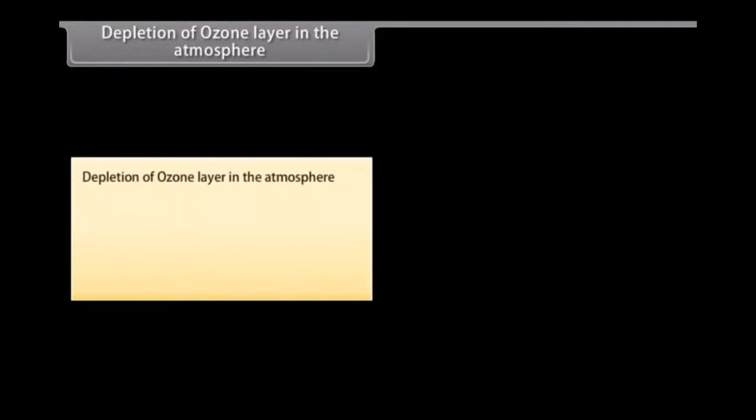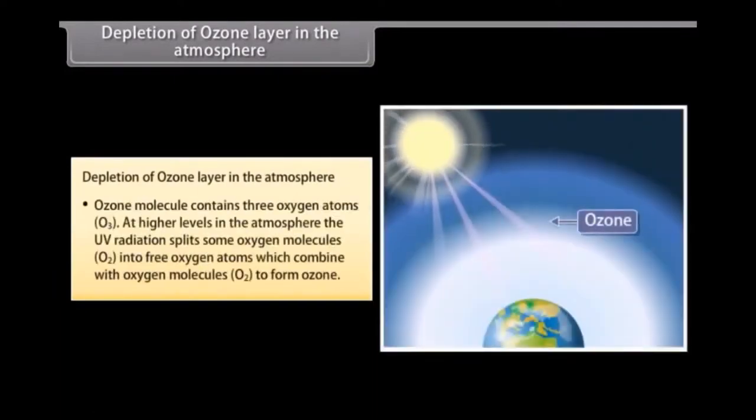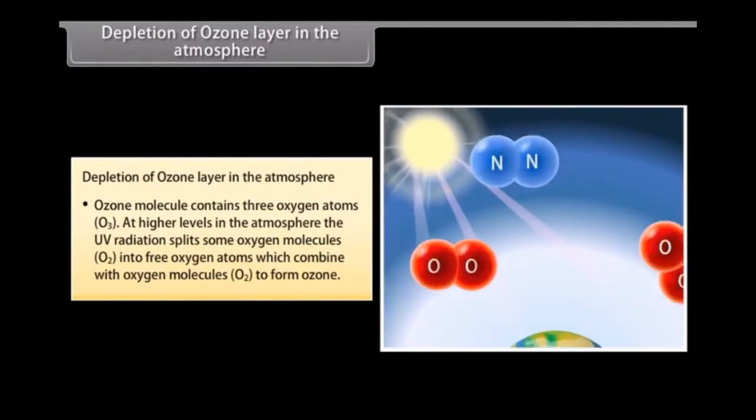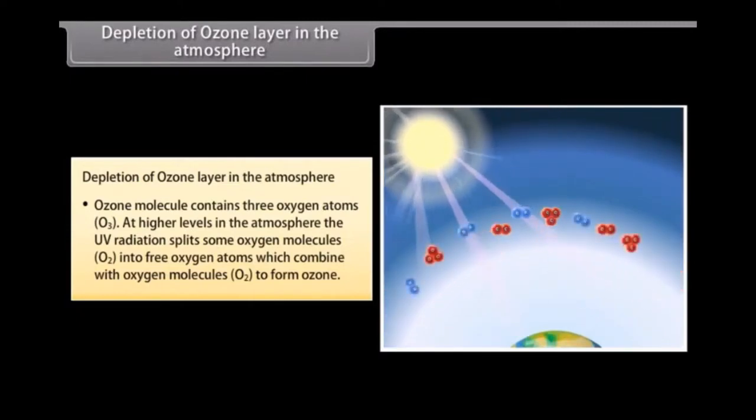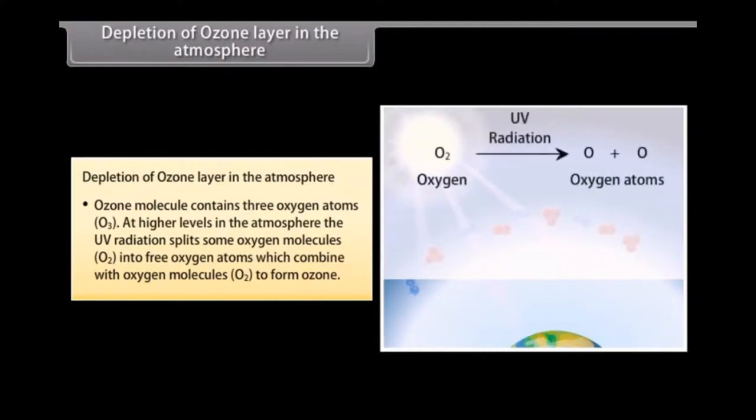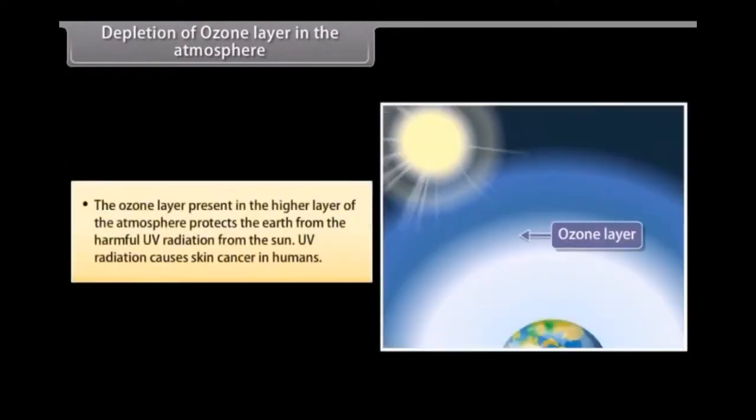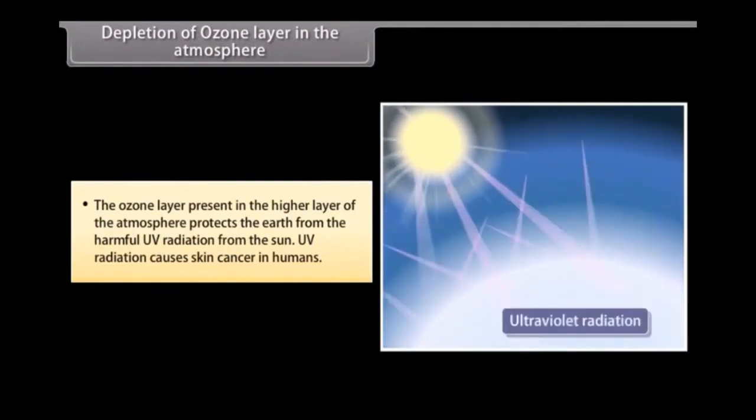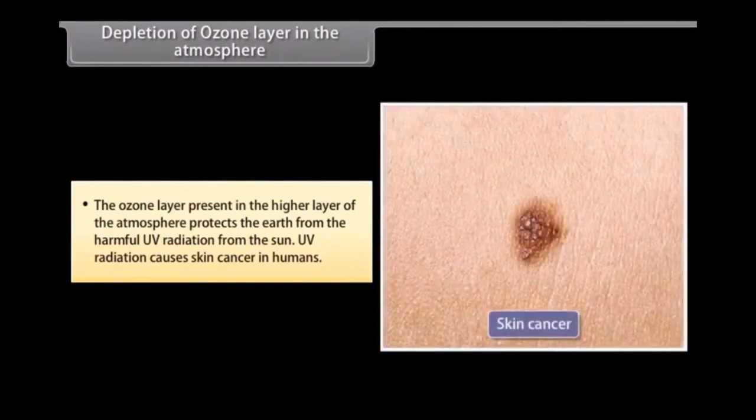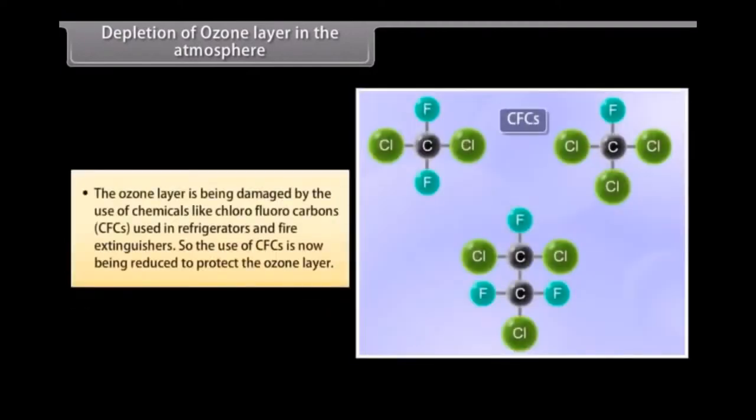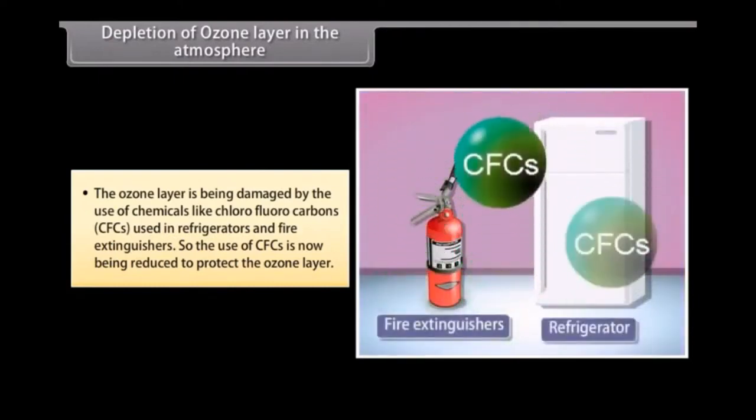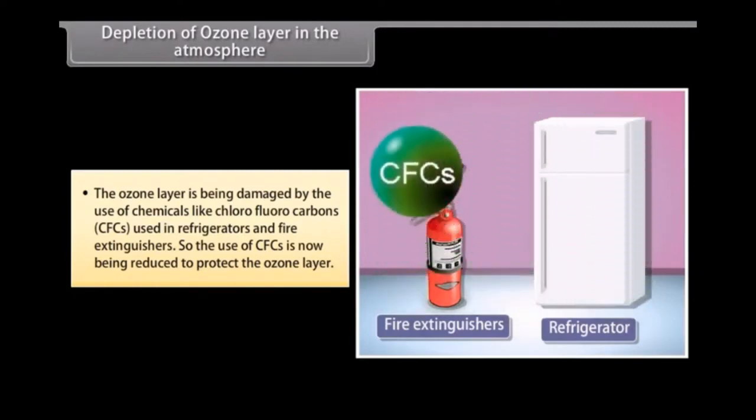Depletion of ozone layer in the atmosphere. Ozone molecule contains three oxygen atoms, O3. At higher levels in the atmosphere, the UV radiation splits some oxygen molecules, O2, into free oxygen atoms which combine with oxygen molecules, O2, to form ozone. The ozone layer present in the higher layer of the atmosphere protects the earth from the harmful UV radiation from the sun. UV radiation causes skin cancer in humans. The ozone layer is being damaged by the use of chemicals like chlorofluorocarbons, CFCs, used in refrigerators and fire extinguishers. So the use of CFCs is now being reduced to protect the ozone layer.